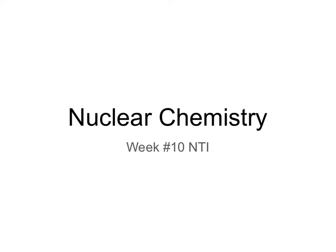Hello everyone, we're going to go through our lesson for week 10, lesson one. We're going to be learning about the different types of radiation and how to balance nuclear radiation equations. Nuclear chemistry is a subject that a lot of students can find difficult, but we're going to break it down to be easier. You definitely need to have your periodic table out and ready to go for anything we do with this section — that's going to be imperative.